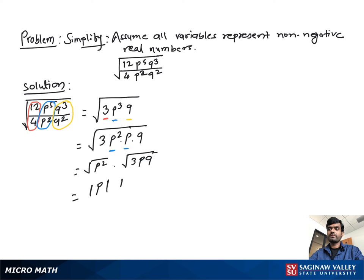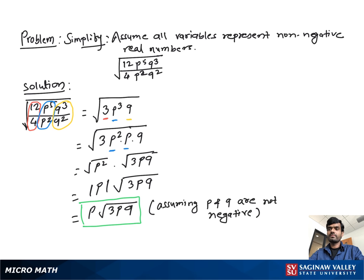We can also write this as P times square root of 3PQ, assuming P and Q are not negative.